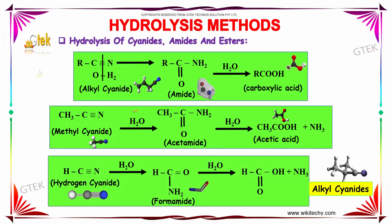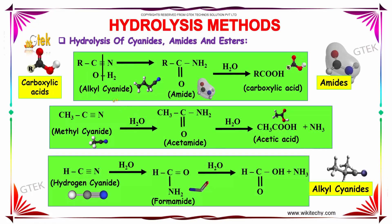When an alkyl cyanide is taken and hydrolyzed, the triple bond and H2O break down to form an NH2 group, as shown here, and formation of an amide takes place. When it is further hydrolyzed, it produces a carboxylic acid.